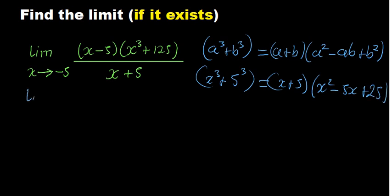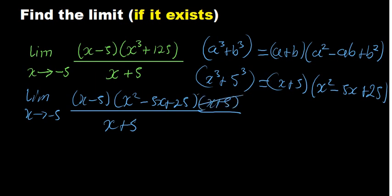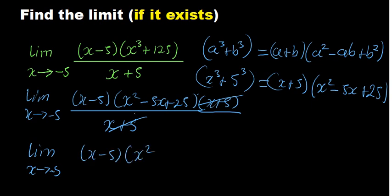So the limit as x approaches minus 5 now has x minus 5 in the numerator multiplied by x² − 5x + 25, divided by x + 5 in the denominator. The (x + 5) factors cancel out, leaving the limit as x approaches minus 5 of (x minus 5)(x² − 5x + 25). Now we can substitute directly.